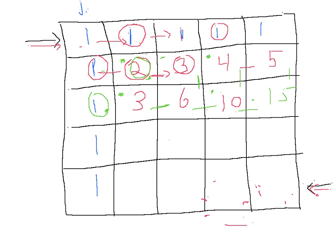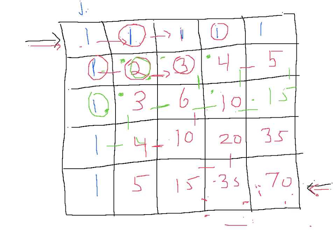We can do everything the same way in the other rows. Adding the values gives me four over here, ten over here — because I can either come in this direction or in this direction — twenty over here, and thirty-five over here. And in the last row, this gives me five, this gives me fifteen, this gives me thirty-five — that's fifteen or the twenty — and finally this gives me seventy. So the total number of ways that I could have done this is seventy ways.